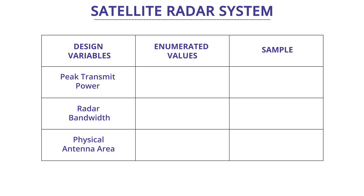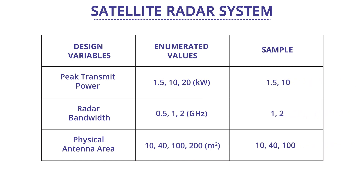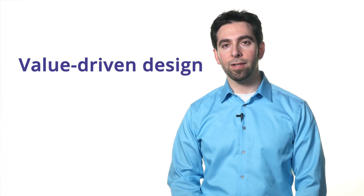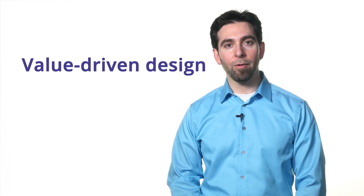These can be parameterized via a design vector, and the design vector must then be enumerated, where we list the possible combinations of different designs, and then we need to sample. The proposed designs and choices need to drive the value attributes — we call this value-driven design. This ensures that we're focusing on answering the right question.